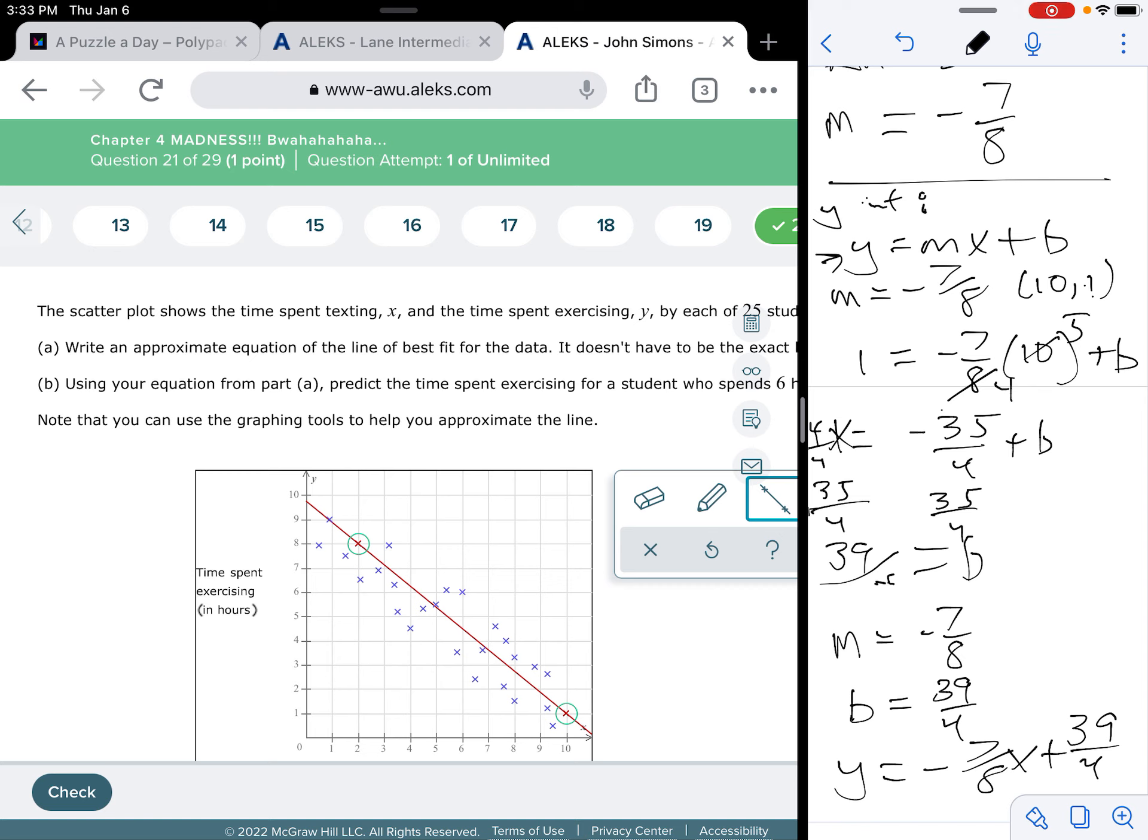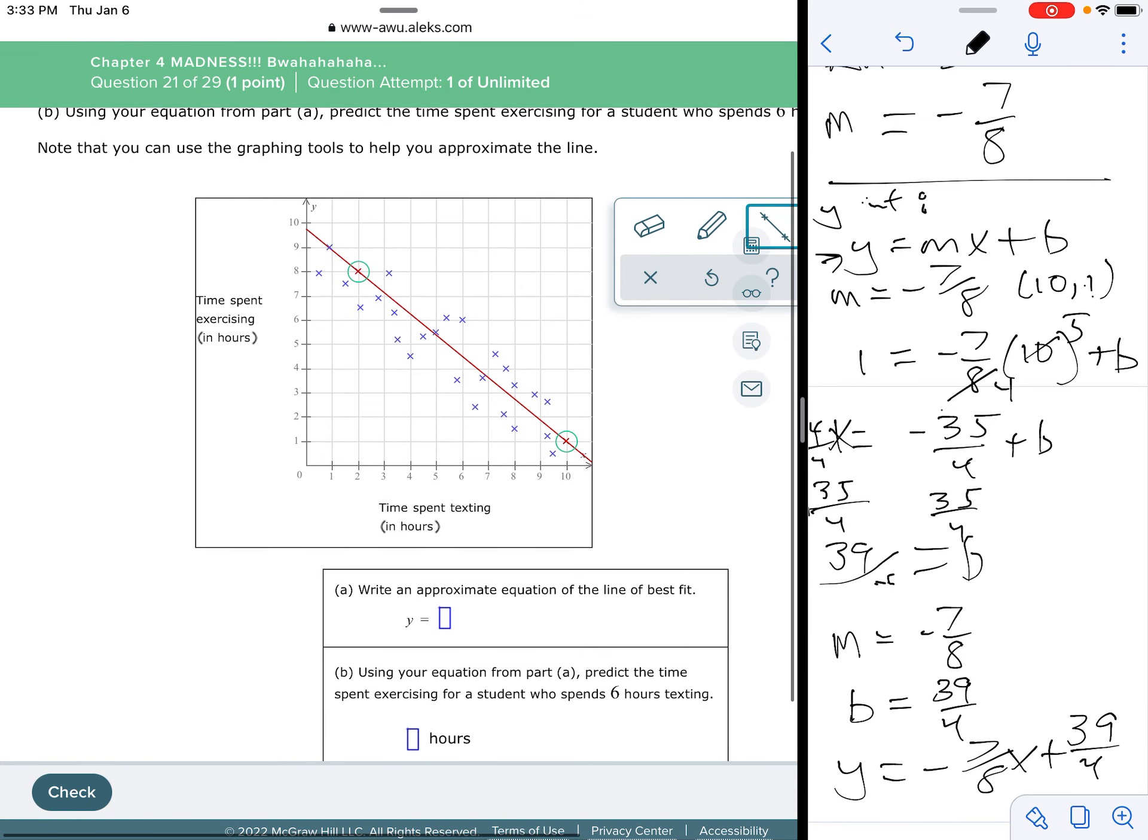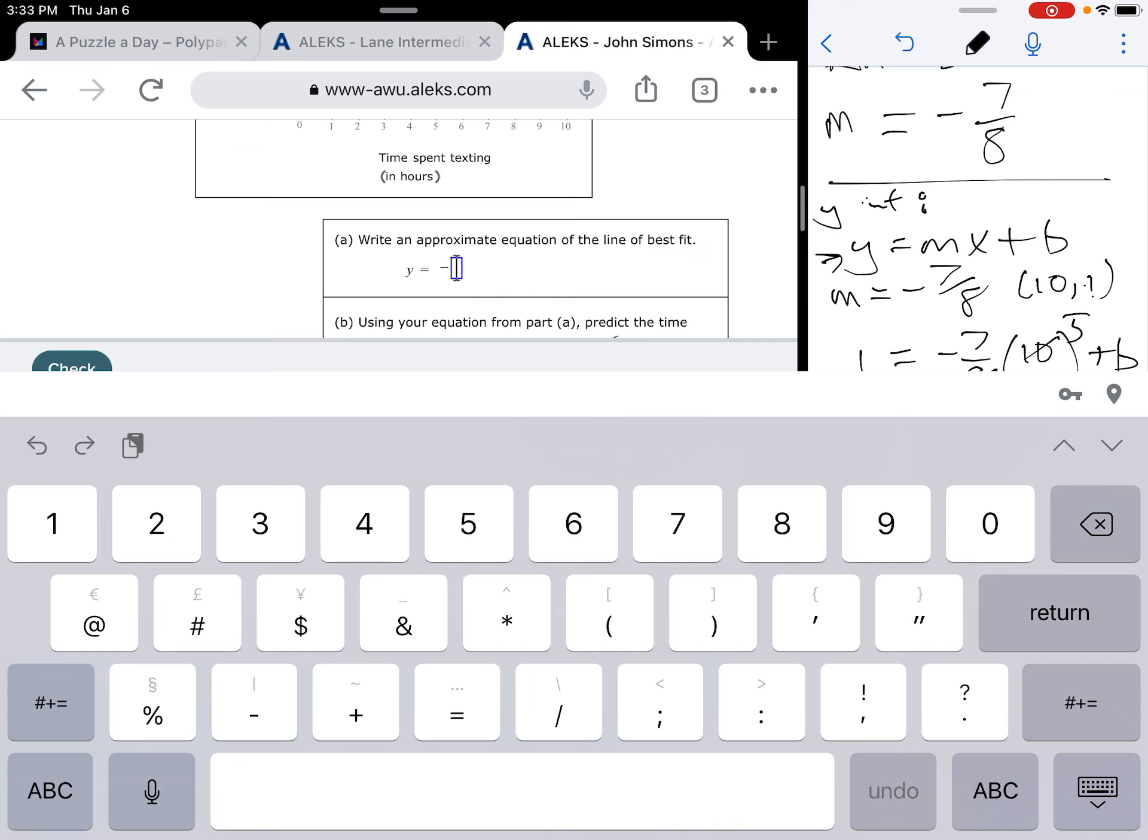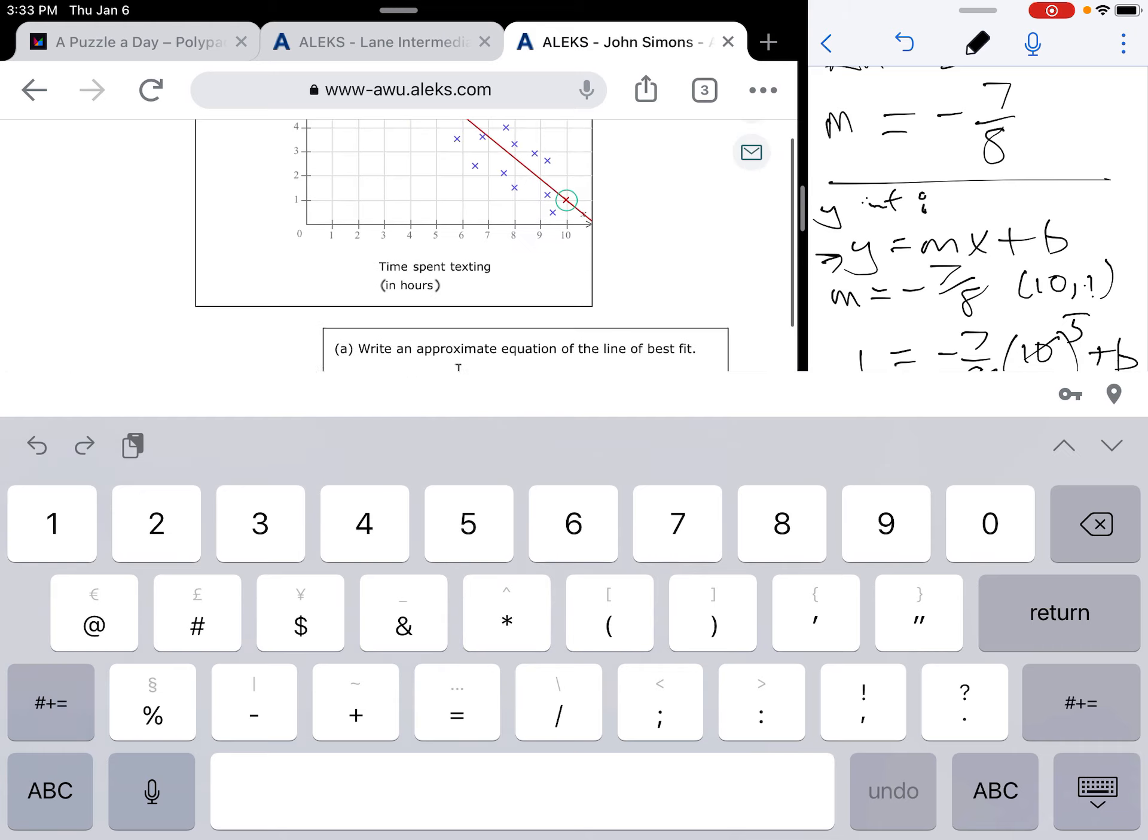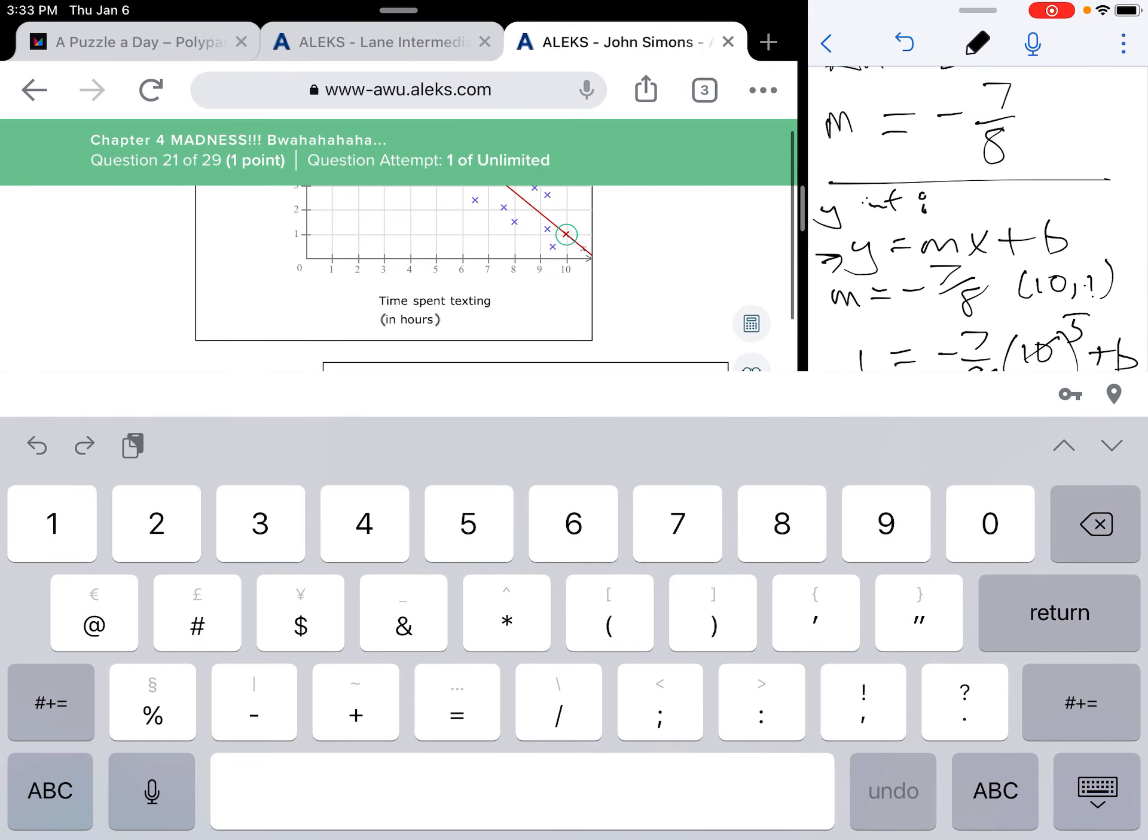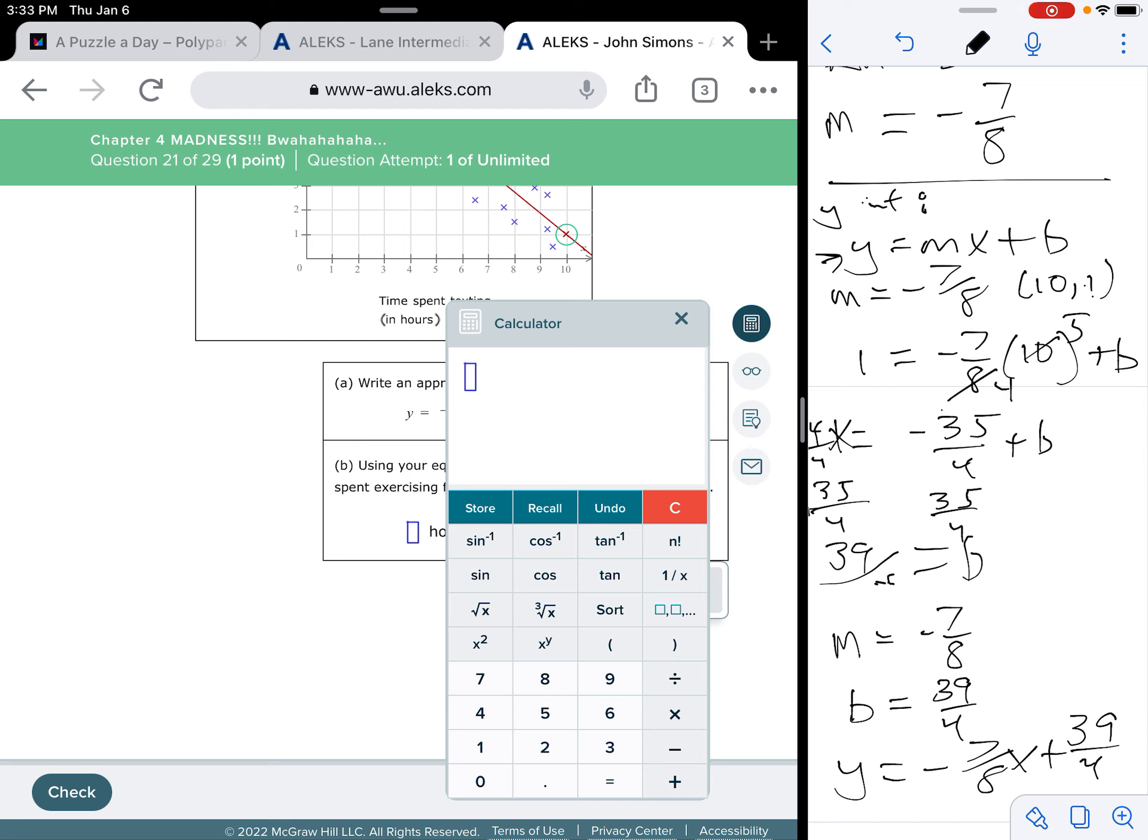And that looks like that works out, looking at the picture. All right. So, let's put this in. So, we have negative 7 eighths. And it's not letting me put in fractions here. So, what we're going to do is we're going to write 7 eighths as a decimal. So, 7 divided by 8 is 0.875.